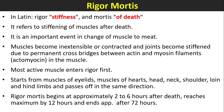Rigor mortis: In Latin, 'rigor' means stiffness and 'mortis' means death. It refers to stiffening of muscles after death. It is an important event in the conversion of muscle to meat. Muscles become inextensible or contracted and joints become stiffened due to permanent cross-bridges between actin and myosin filaments in the muscle.